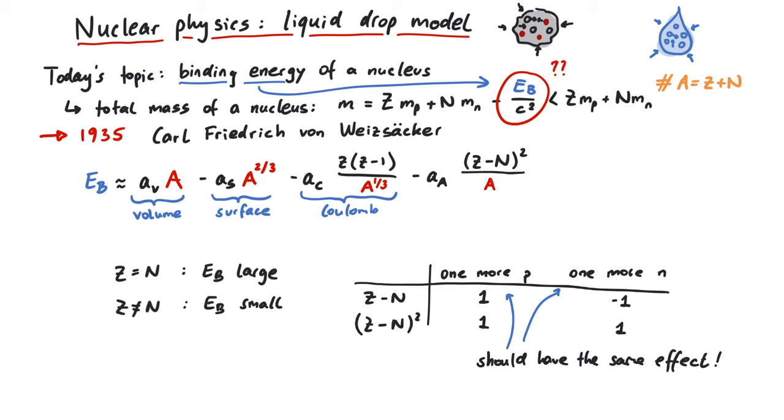Finally we divide by A, which reflects the observation that for larger nuclei this effect becomes less and less important. This term is called asymmetry term, and the reason we have to include it is based on the Pauli exclusion principle.